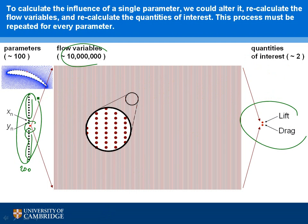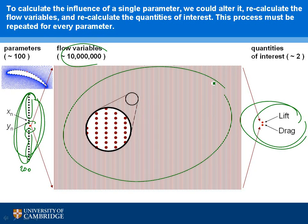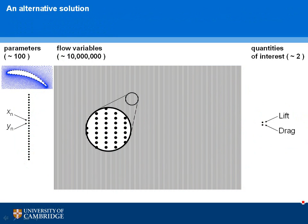That is expensive because we have a lot of parameters. Another way of thinking about it: during those 200 calculations just to form the finite difference gradient, we're throwing away a lot of information. We're only interested in two things — lift and drag — and yet along the way we're working out the whole flow solution for every single one of those changes, then discarding that information. The alternative is to do essentially the same calculation but in reverse.